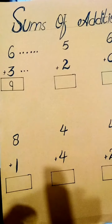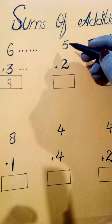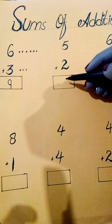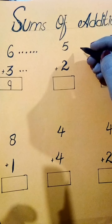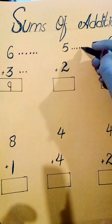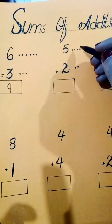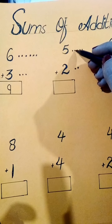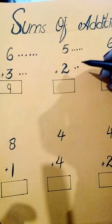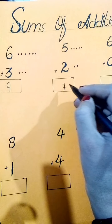यह हमने add कर दिया। इसी तरह यहां पर five है, हमने five dots लगाने हैं और फिर two dots लगाने हैं, फिर count करना है — हमारे पास आएगा seven। One, two, three, four, five; one, two। Count with me: one, two, three, four, five, six and seven। Answer आया seven।